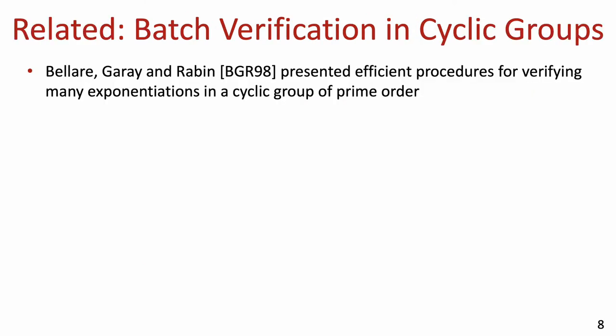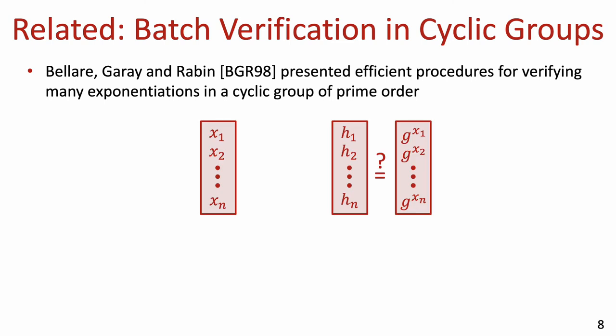Before going back to verification of VDF outputs, I want to take a little detour and talk about a related work from over 20 years ago that deals with batch verification of exponentiations in cyclic groups of prime order. The setting is the following: we have n exponents x1 to xn and n group elements h1 to hn, and we wish to verify that hi equals g raised to the power of xi for each index i, for a publicly known generator g. Belar, Garay, and Rabin presented several batching techniques to solve this problem, and some of their ideas are actually implicit in recent works on single-instance VDF verification.